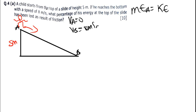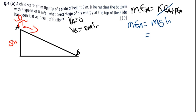The mechanical energy is the addition of kinetic energy at point A plus potential energy at point A. Since the velocity is zero, there is no kinetic energy at point A. So the initial mechanical energy equals mgh, where g is 9.8 and h is 5. So the initial mechanical energy is 9.8 × 5 = 49m joules.